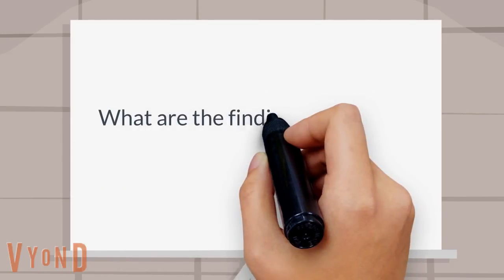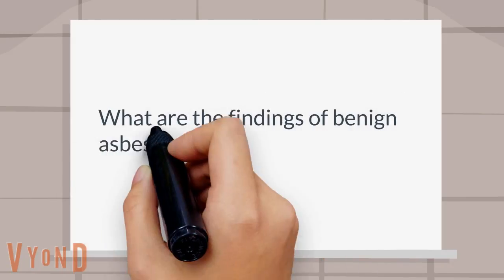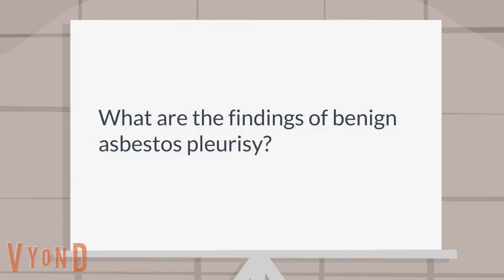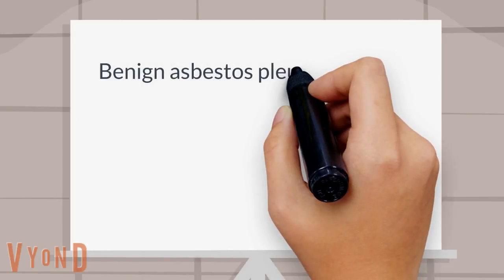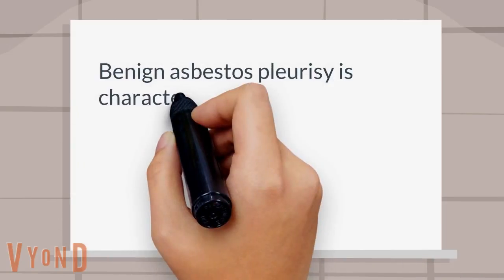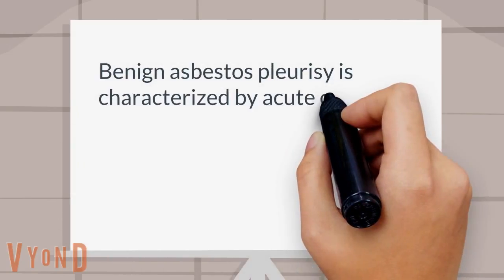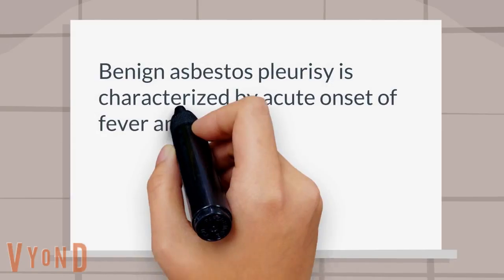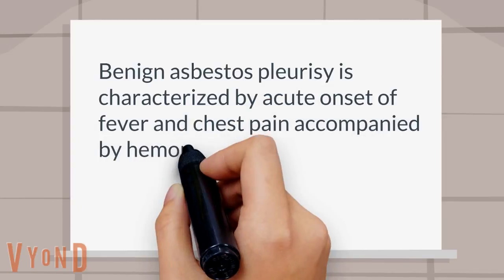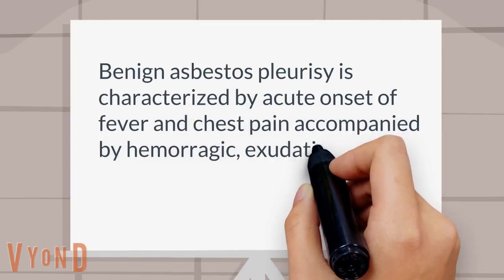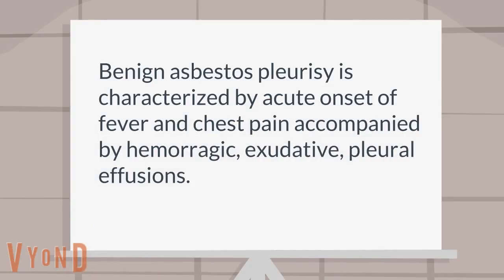What are the findings of benign asbestos pleurisy? Benign asbestos pleurisy is characterized by acute onset of fever and chest pain accompanied by hemorrhagic, exudative pleural effusions.